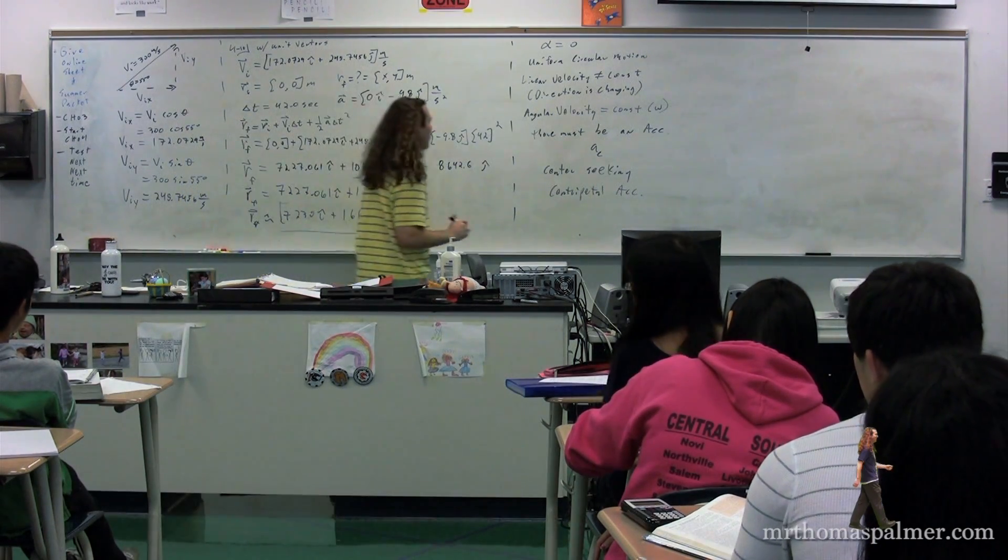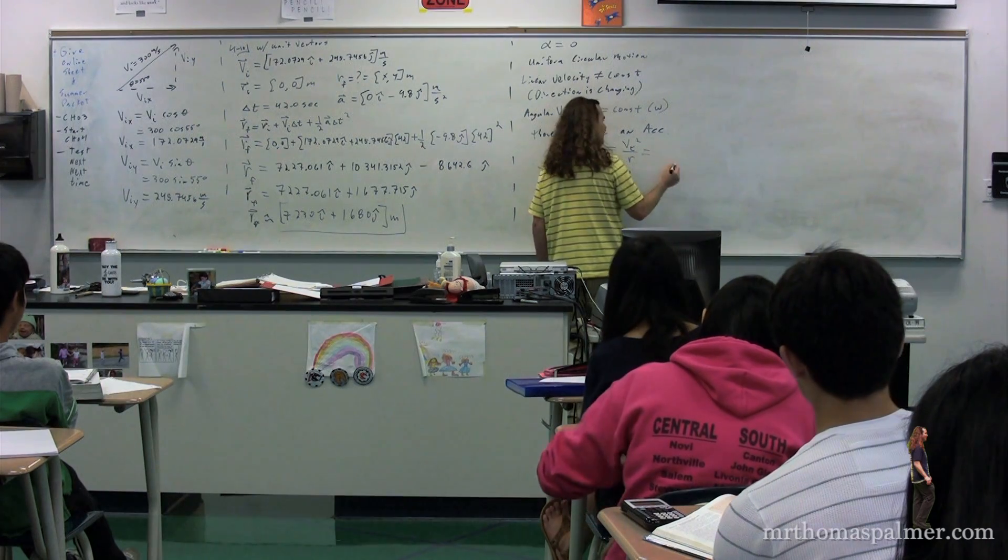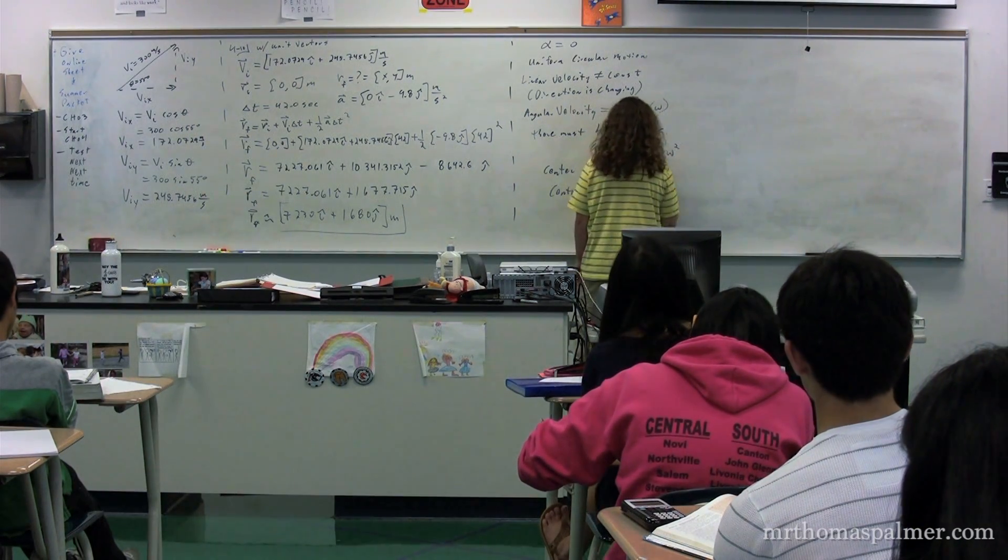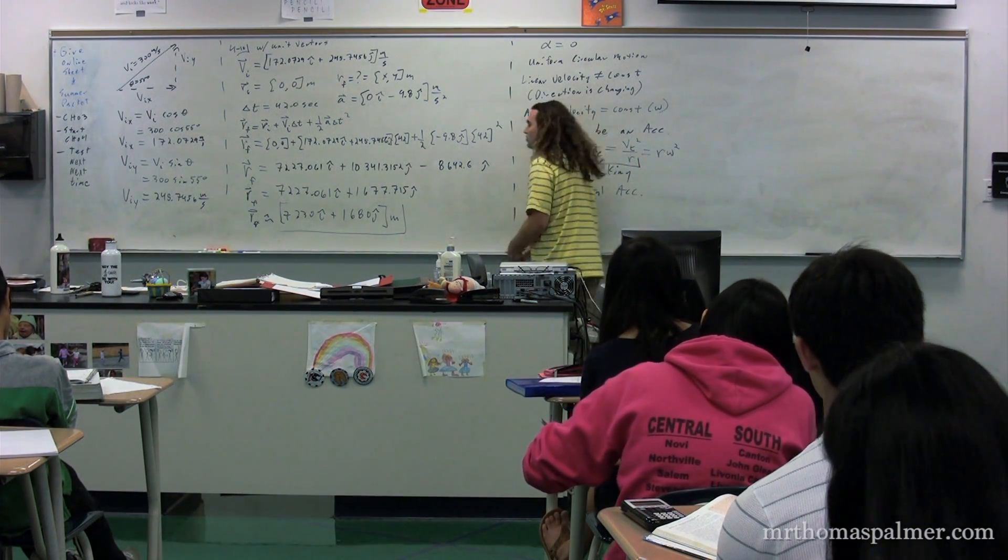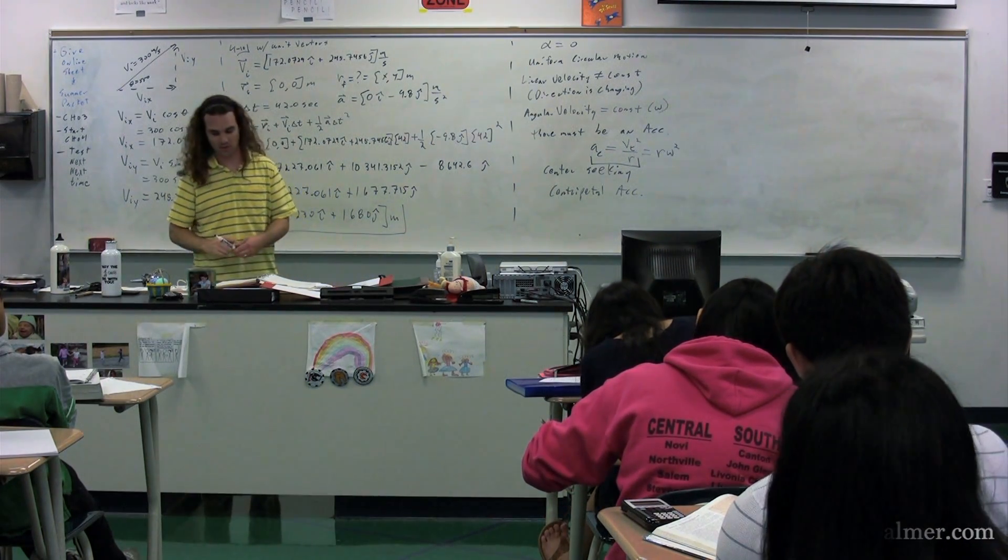So, we already have an equation for centripetal acceleration. It's the tangential velocity squared divided by the radius. It's also the radius times the angular velocity squared, but we're going to concentrate right now on the centripetal acceleration and the velocity squared divided by the radius. That's where we're going to start.